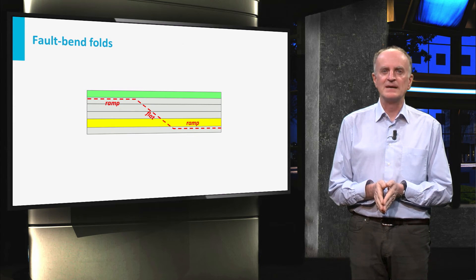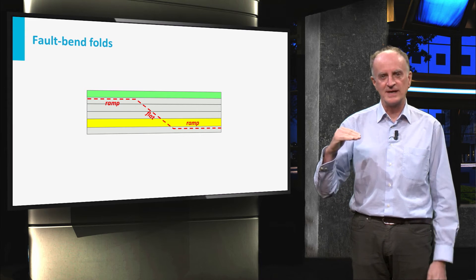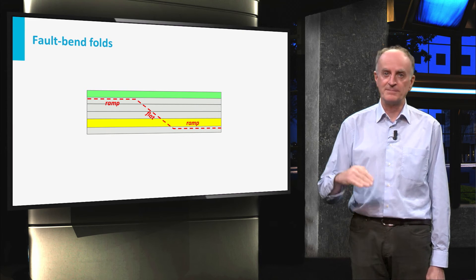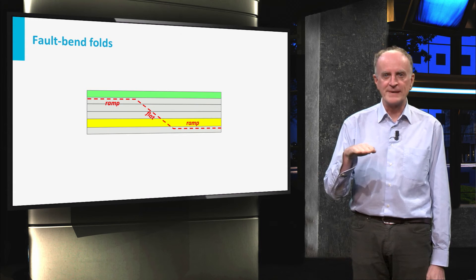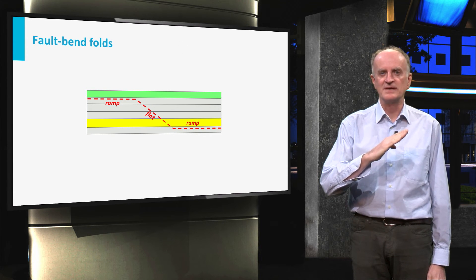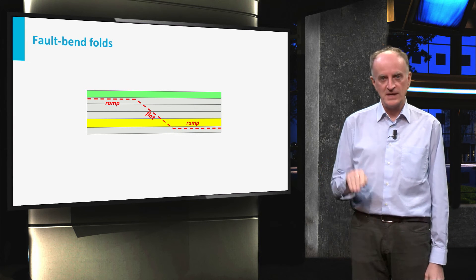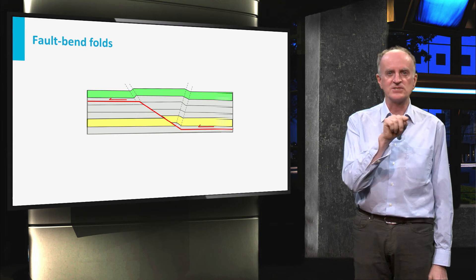A very different type of fold develops when the layers experiencing compression break along a reverse fault. Typically, these faults run parallel to bedding for a certain distance and then cut across the stratigraphy, eventually reaching another level of flat position. Because of this staircase shape,